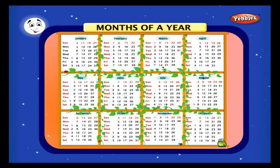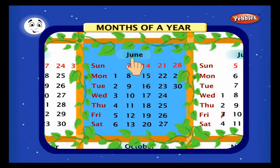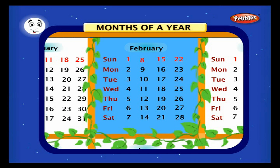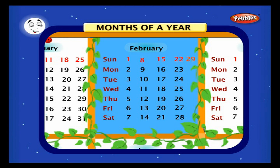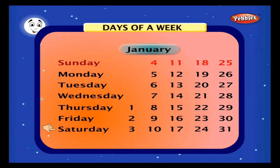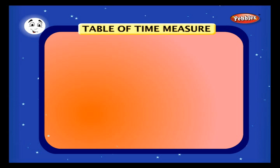But some months have 30 days, namely April, June, September, and November. February is the only month with 28 days, but once in four years there are 29 days in that month, and that year is called the leap year. There are seven days in a week, namely Sunday, Monday, Tuesday, Wednesday, Thursday, Friday, and Saturday.